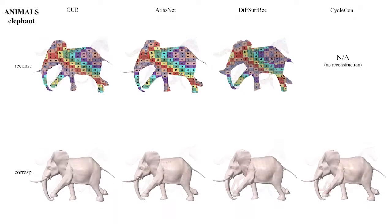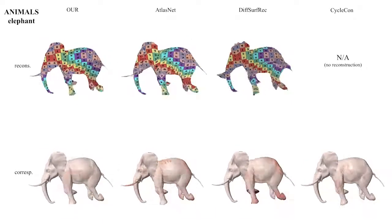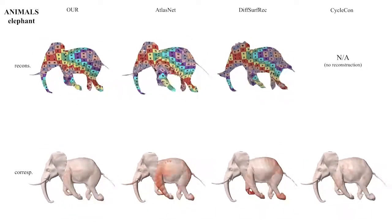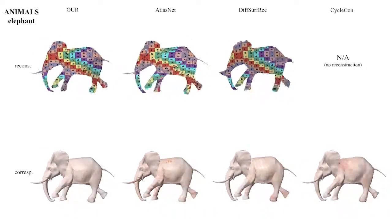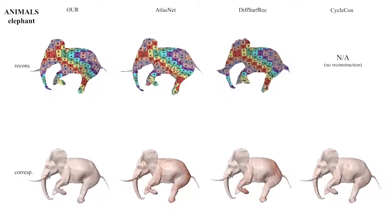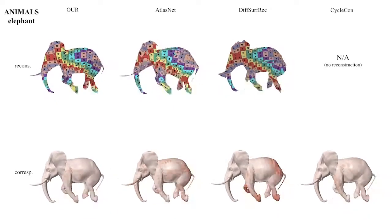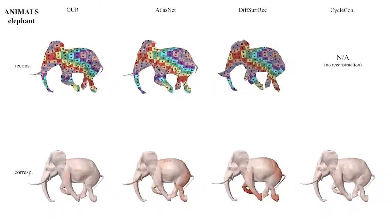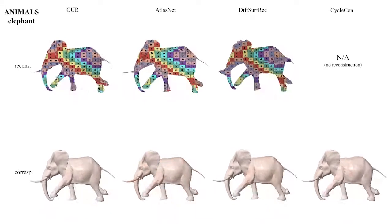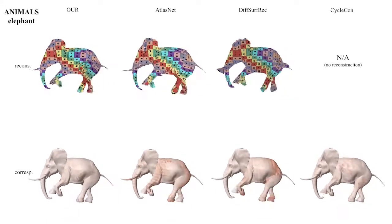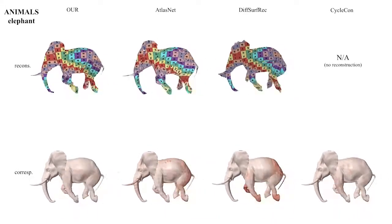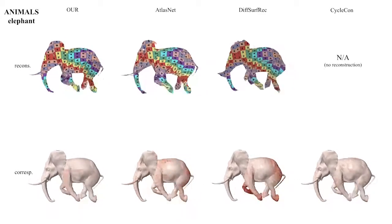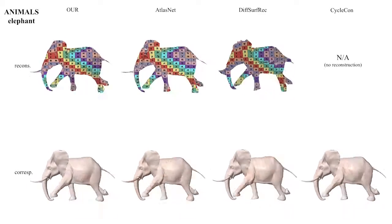In the elephant's case, errors are more subtle but still rather disturbing, as they manifest in terms of local surface flickering in the case of AtlasNet and DSR. While our method exhibits an error in the area of the left rear leg, it still yields the highest reconstruction and correspondence accuracy.